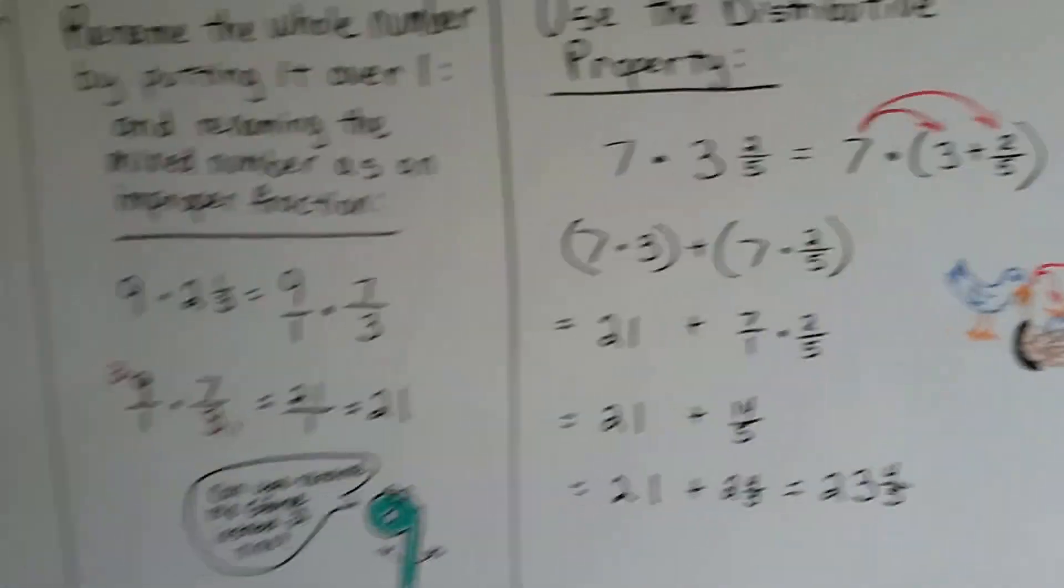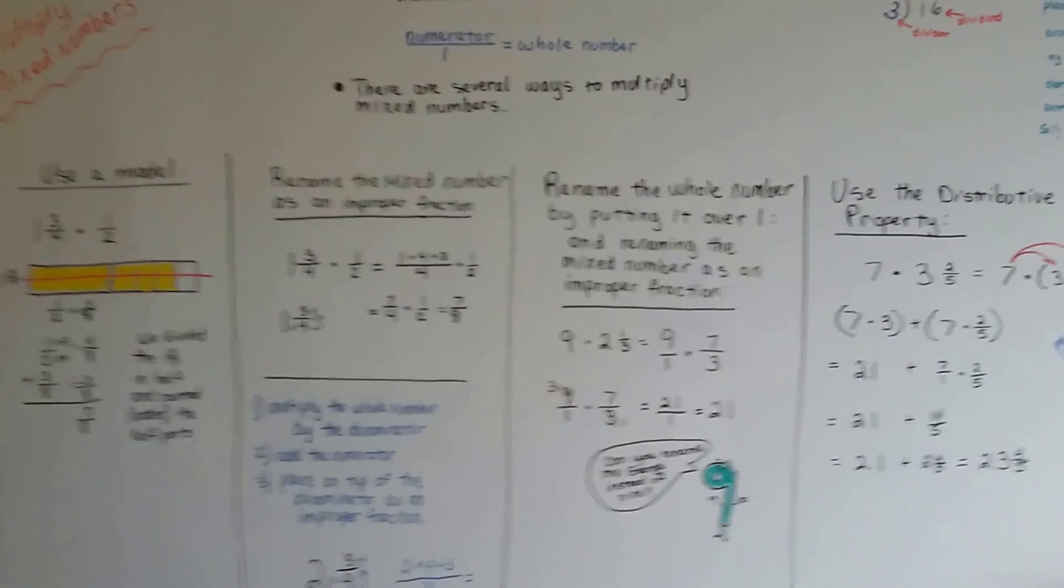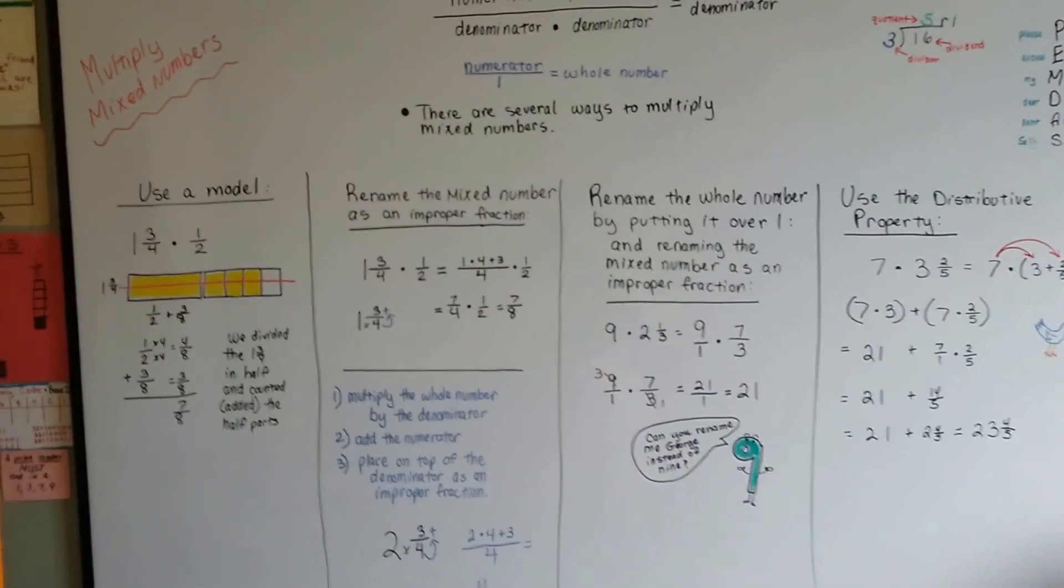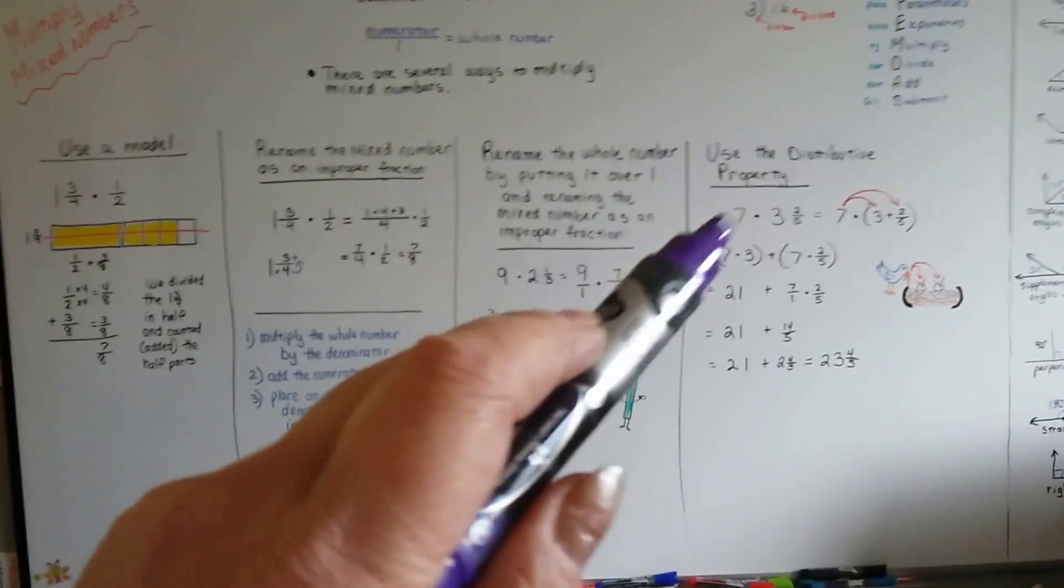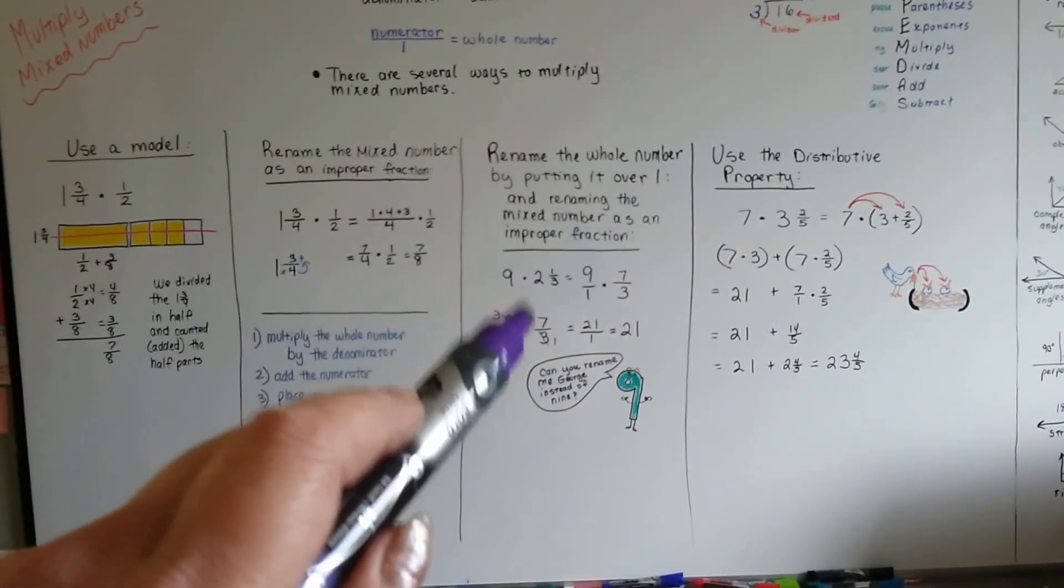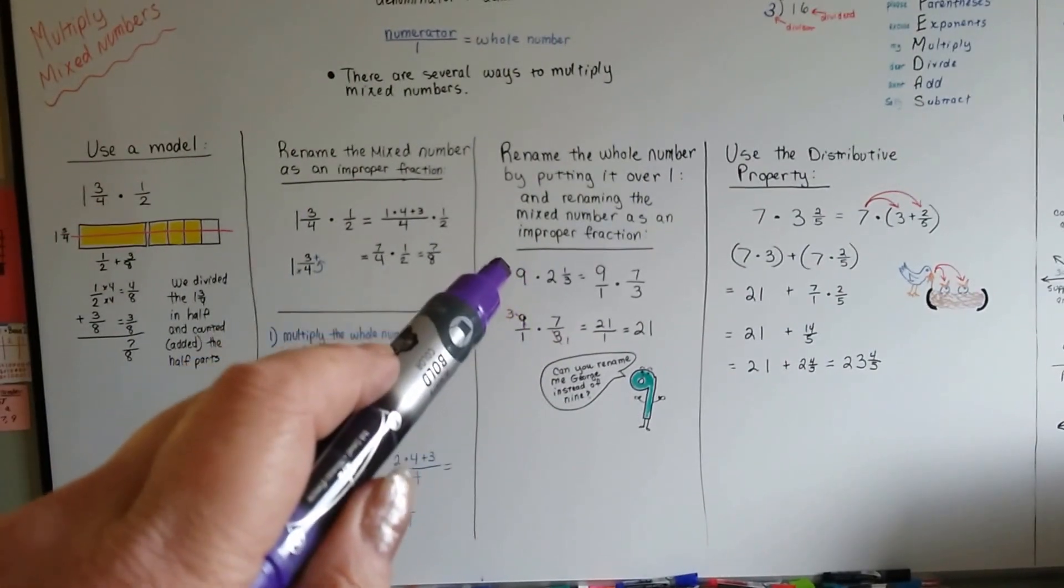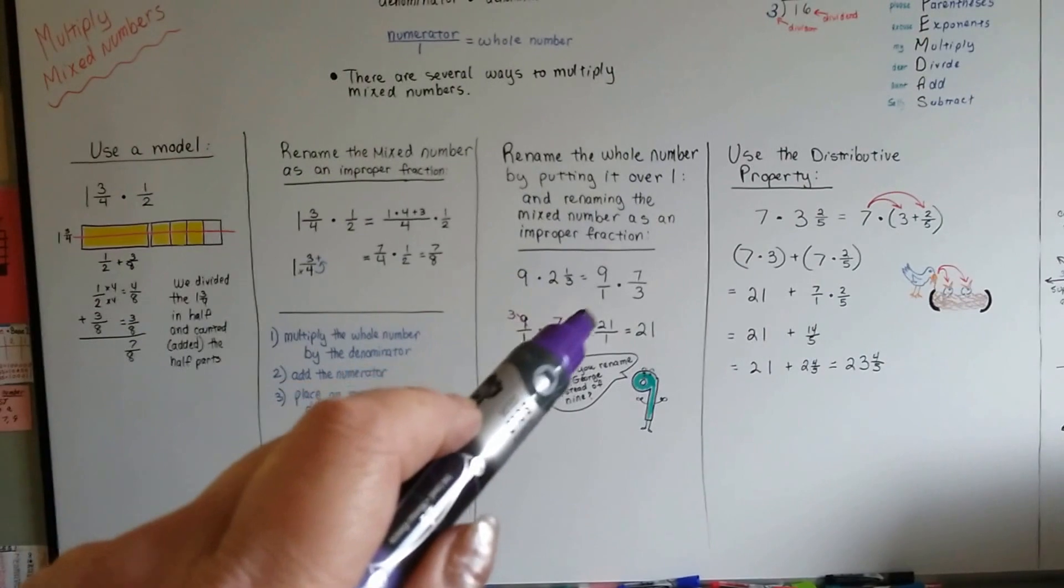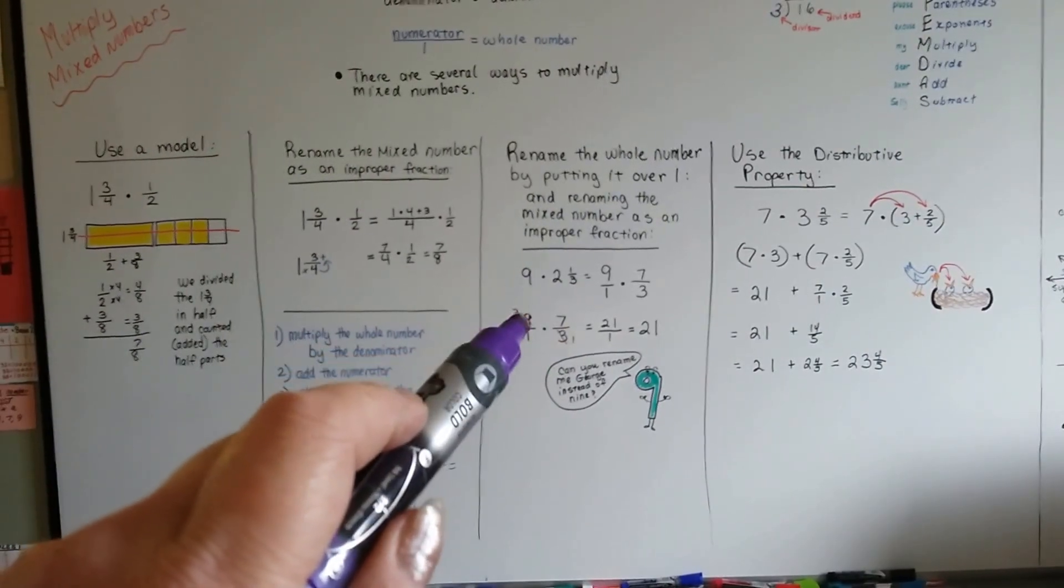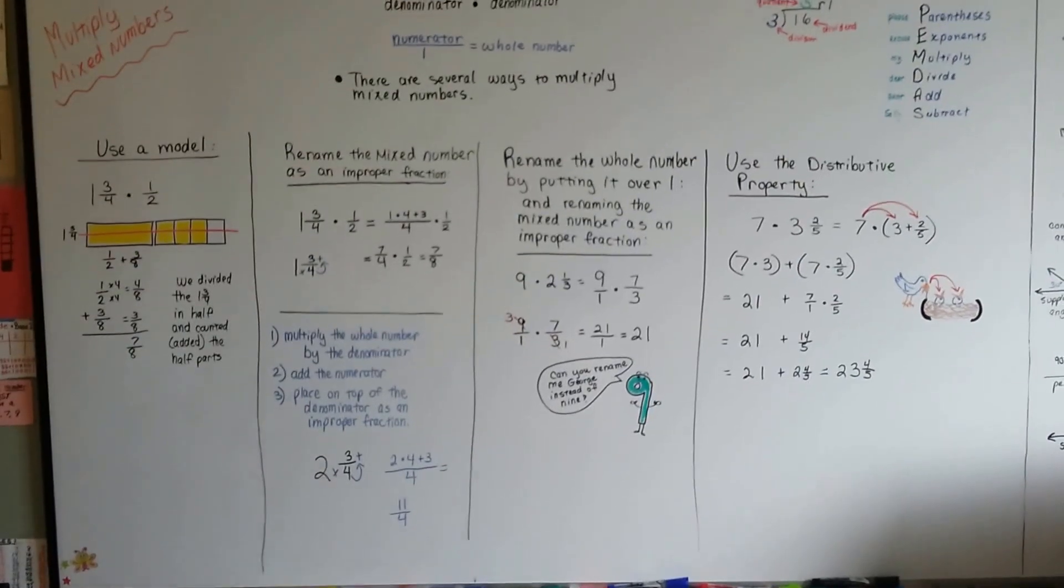And we did that by using the distributive property. So any one of these 4 ways can help you multiply mixed numbers. The most normal way is the one with George. You can use the distributive property but this is the most widely used way. You rename the whole number by putting it over a 1 and you rename the mixed number as an improper fraction and just do your work. Alright?